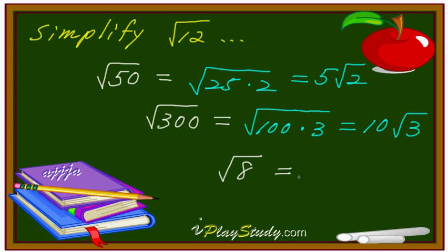So what about this one? That's right. This one, 4 times 2. 4 is the perfect square number by 2. Then square root of 2. That's it.